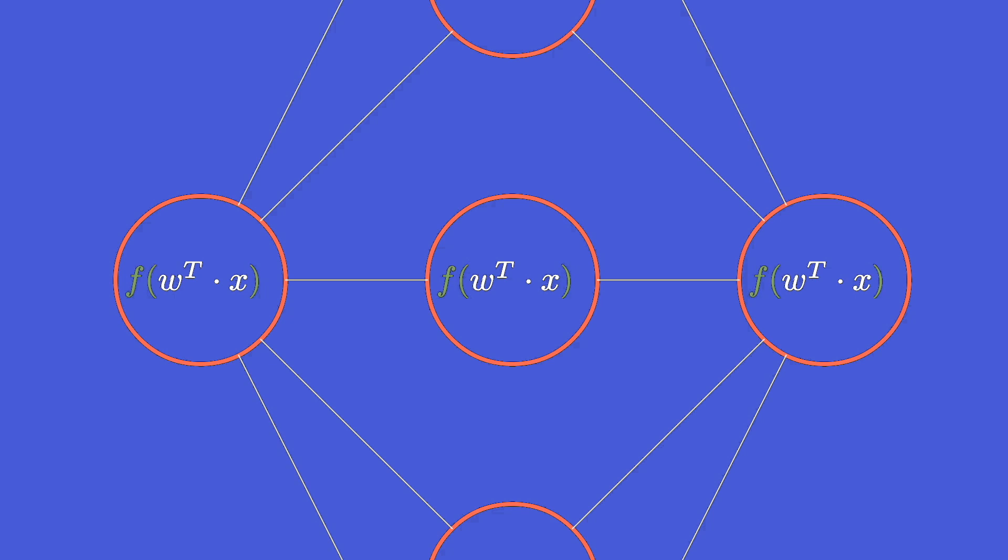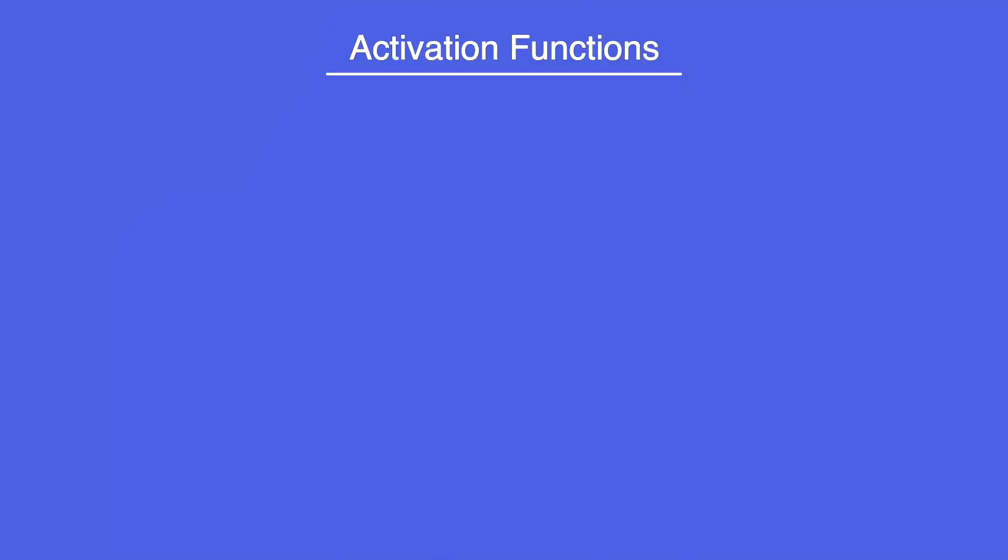So after each layer we want to apply an activation function. This applies a non-linear transformation and helps our network to solve complex tasks. Now let's have a look at different kinds of activation functions. There are many different activation functions you can choose. So we take a look at the most popular ones.